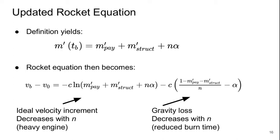If we use this new definition to update our rocket equation, we get M' at burnout is M'payload plus M'structure plus N times alpha. The rocket equation then becomes VB minus V0 equals minus C times the natural logarithm of M'payload plus M'structure plus N alpha, minus C times (1 minus M'payload minus M'structure over N minus alpha). This first term is the ideal velocity increment, which decreases with N because the engine gets heavier. The second term is the gravity loss, which also decreases with N due to reduced burn time.